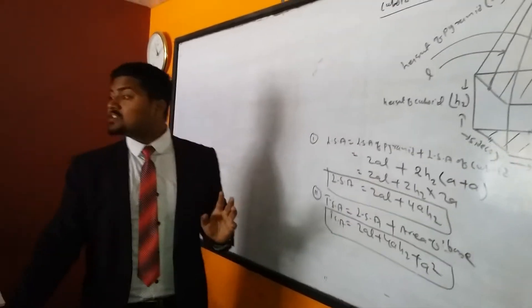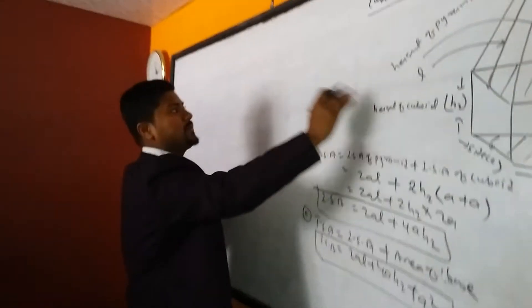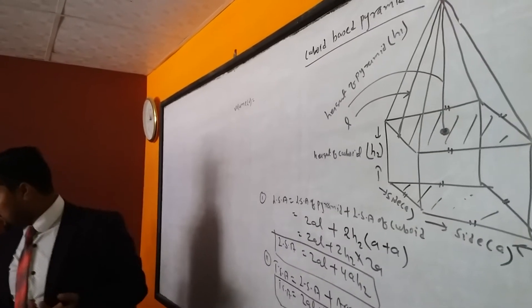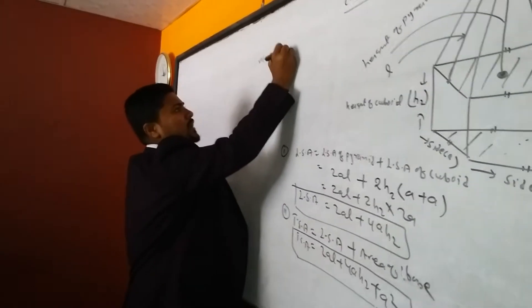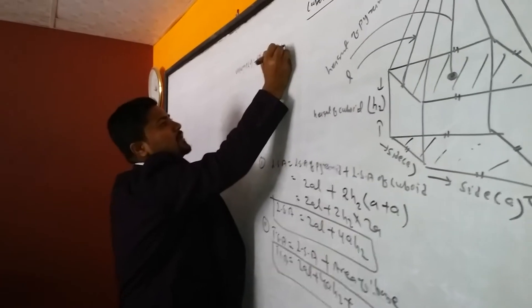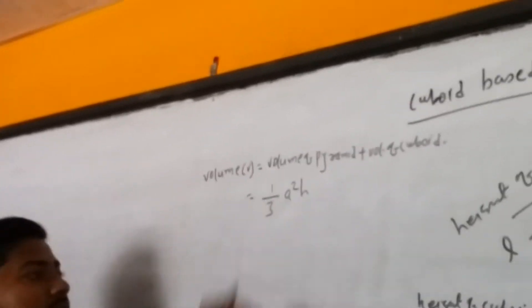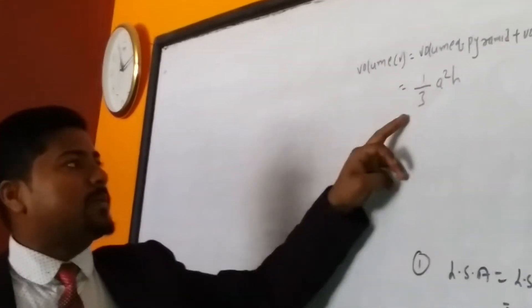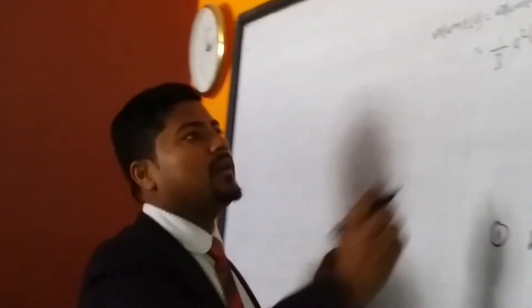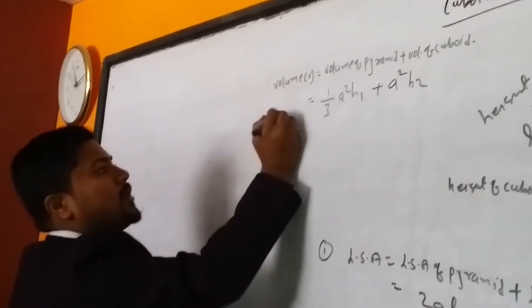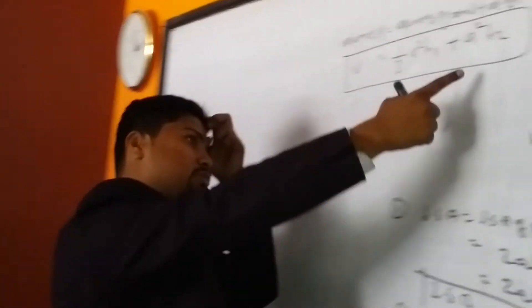Now let's find the volume of the cuboid-based pyramid. Volume = volume of pyramid + volume of cuboid. Volume of pyramid = (1/3) × a² × h1, where h1 = height of pyramid (S1). Volume of cuboid = length × breadth × height = a × a × S2 = a²S2. So total Volume = (1/3)a²h1 + a²S2.